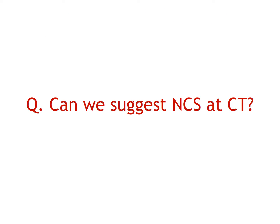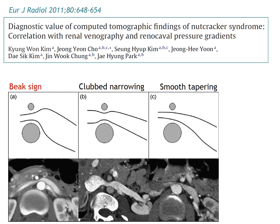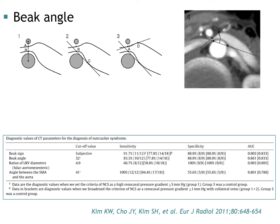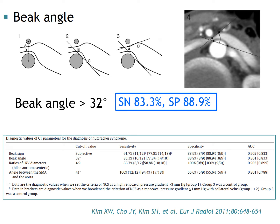Can we diagnose nutcracker syndrome at CT? Because nowadays CT is the most common study for evaluation of patients with intermittent gross hematuria. In a 2011 study, we classified the shape of renal vein compression into three types: beak sign positive, club narrowing, and smooth tapering. The beak sign was useful in distinguishing nutcracker syndrome from normal with high sensitivity and specificity. We also measured beak angle, and a beak angle of 32 degrees was a useful threshold. Left renal vein diameter ratio and SMA angle can also be used with these thresholds.